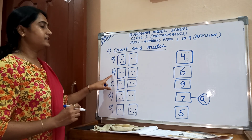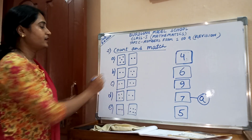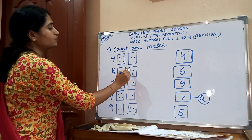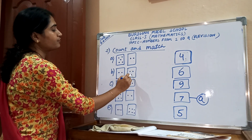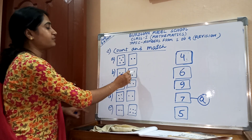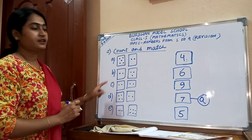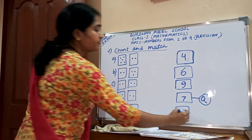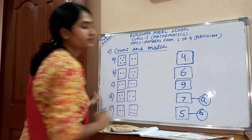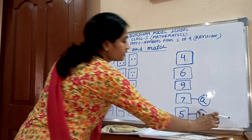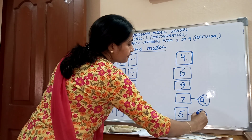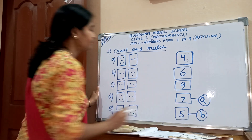Number B: count the dots — one, two, three, four, five. There are five dots. Where is 5? Here. Match number B with 5.